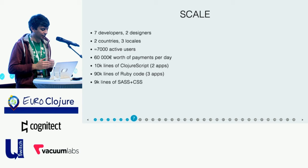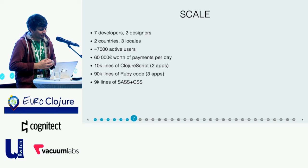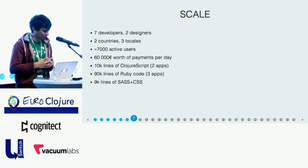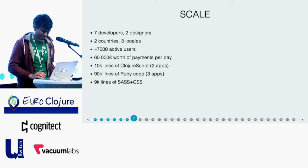To give you an idea of the scale of our project, as I mentioned earlier, we're seven developers and two designers. We're available in two countries, Sweden and Finland, and also across three locales. We have about 7,000 active users and about 60,000 euros worth of payments every day. So it's not Google, but honest numbers. About 10% of our code today is ClojureScript, the rest is Ruby on Rails. Fun fact, we have about as much CSS code as ClojureScript code today — shout out to the designers, you're very important.